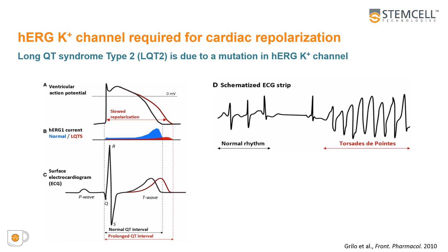Using the STEMdiff cardiomyocyte differentiation kit produces HPSC-derived cardiomyocytes with reliable and consistent excitability profiles across multiple HPSC lines. We next wanted to model the long QT type 2 syndrome, which is due to a mutation in a HERG channel. The HERG potassium channel is required for cardiac repolarization.